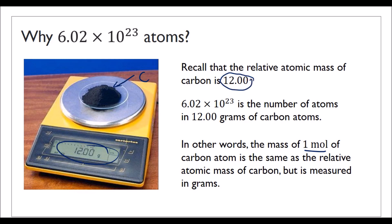One mole of carbon atoms can be measured on a regular scale, so it can be measured in grams. If the relative atomic mass of carbon is 12, the mass of one mole of carbon atoms is 12 grams. This is why we settle for this particular number — so that when you have these many atoms of carbon, you will have the same mass as the relative atomic mass, but measured in grams, which is something you can put on a scale.